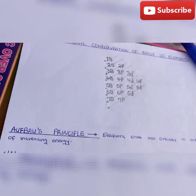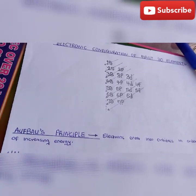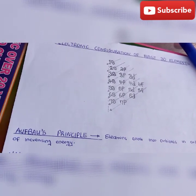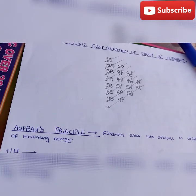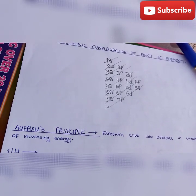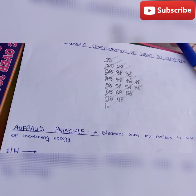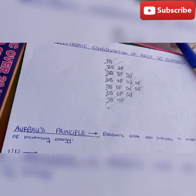All right guys, good afternoon. Welcome back to my channel. I still remain Dr. Chuby. So actually what we'll be looking at today is how to write the electronic configuration of the first 30 elements.